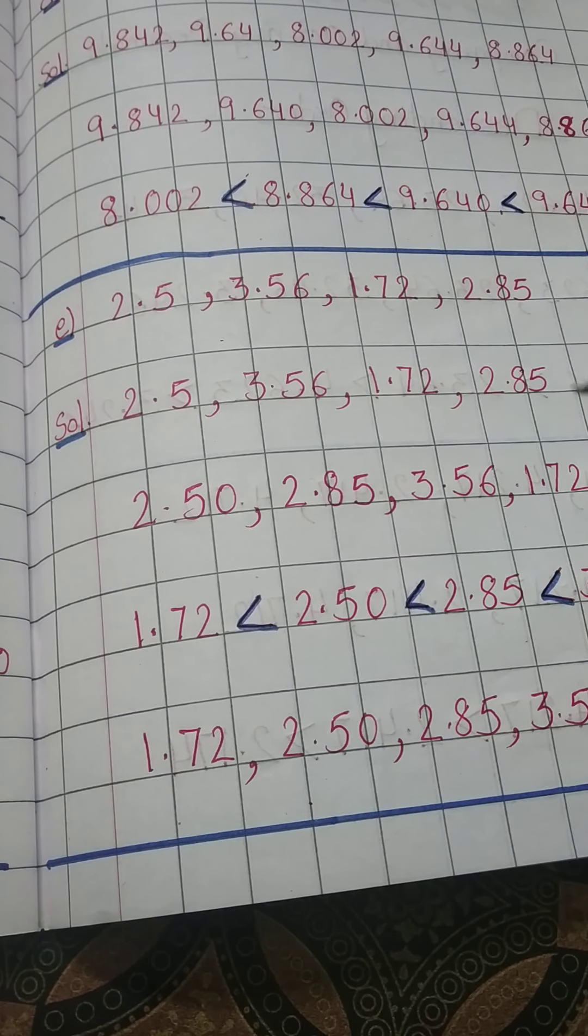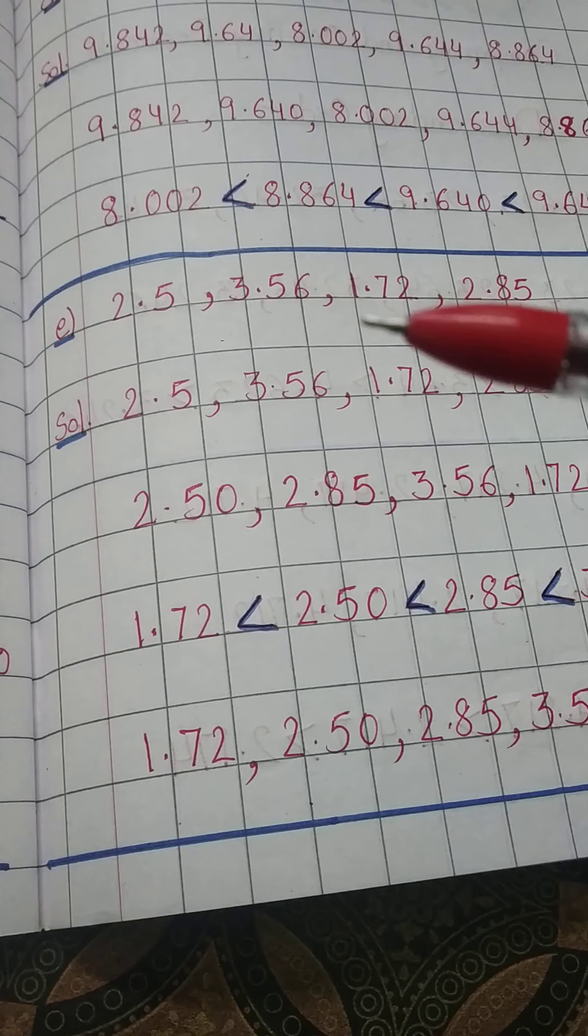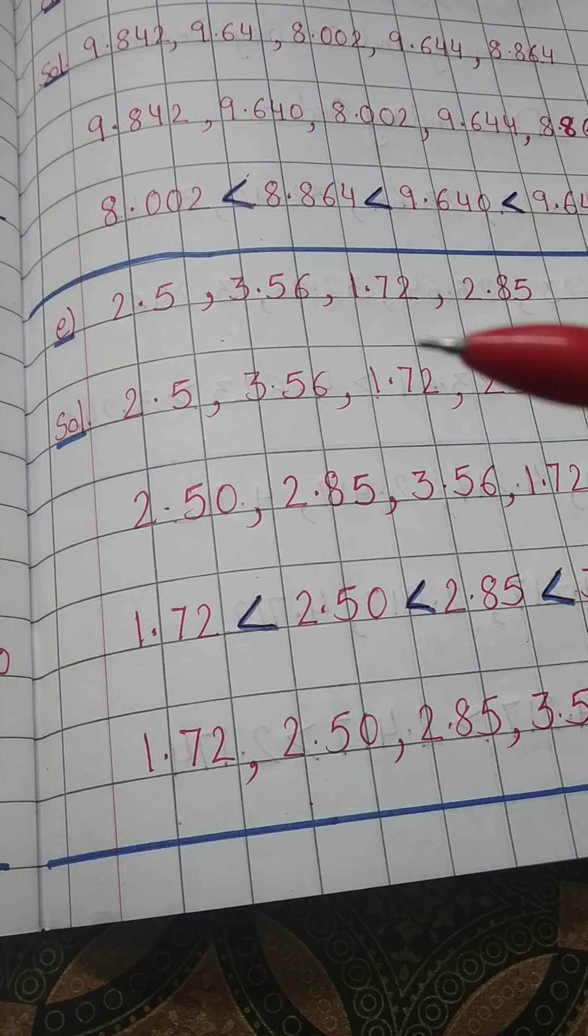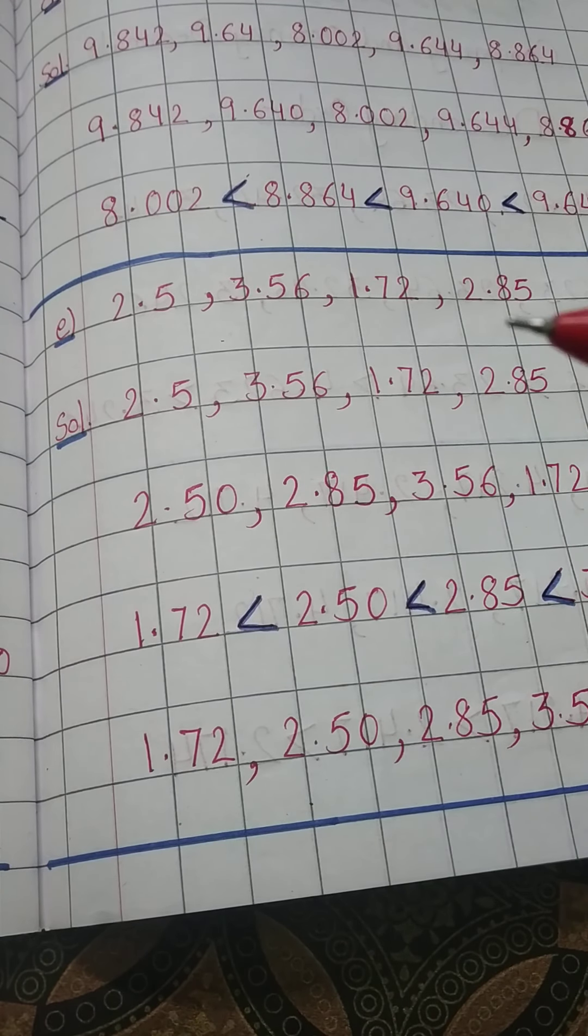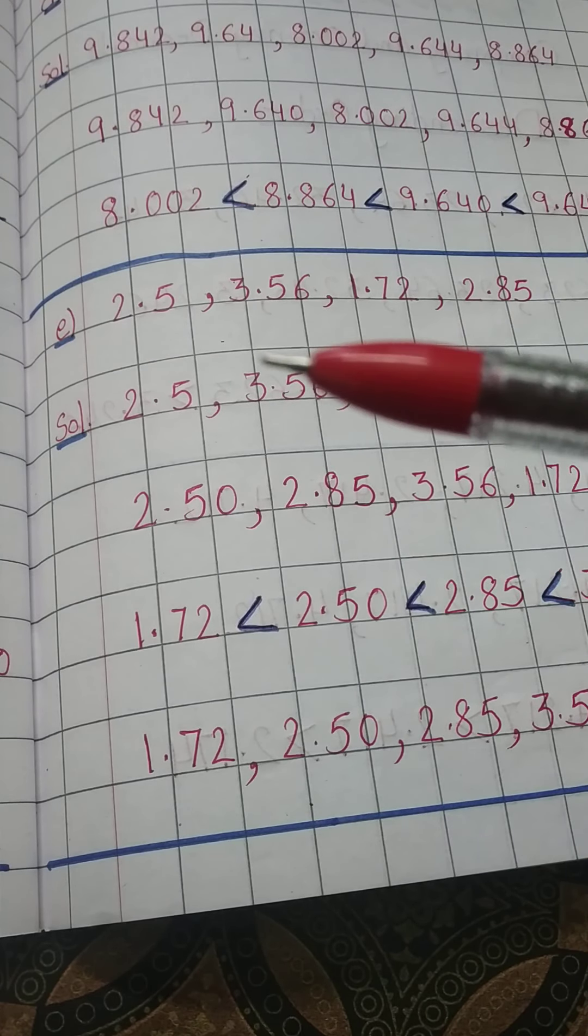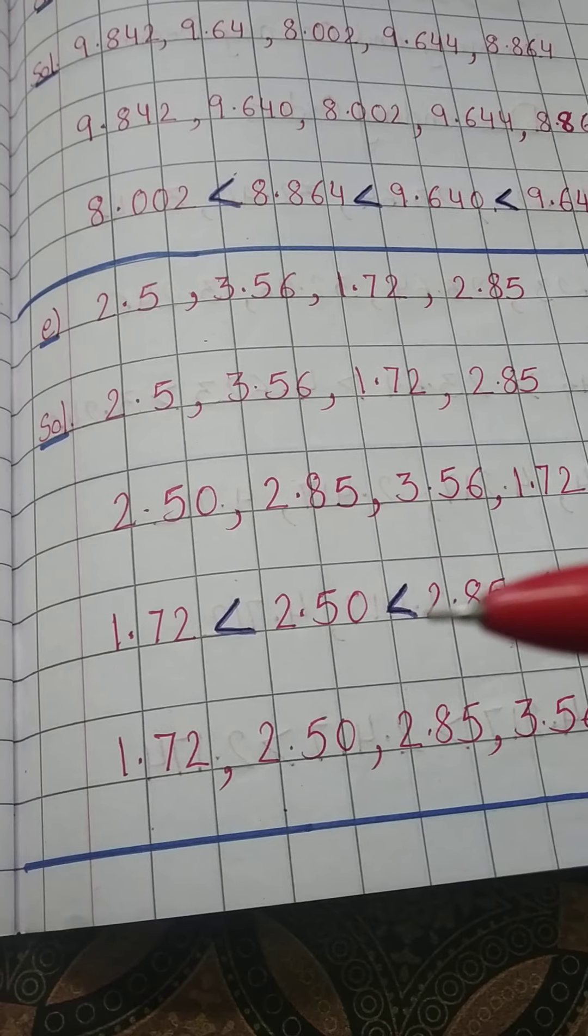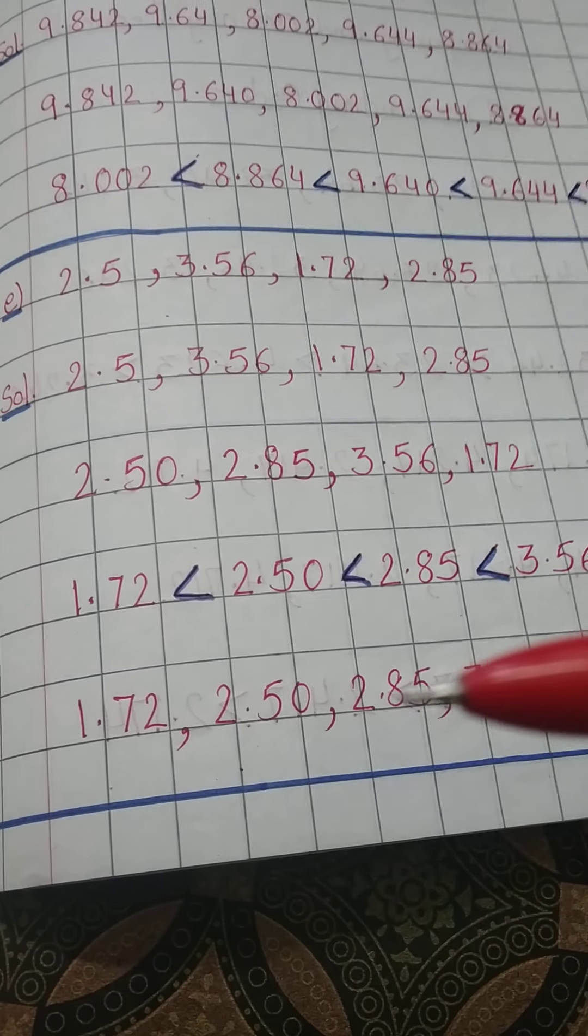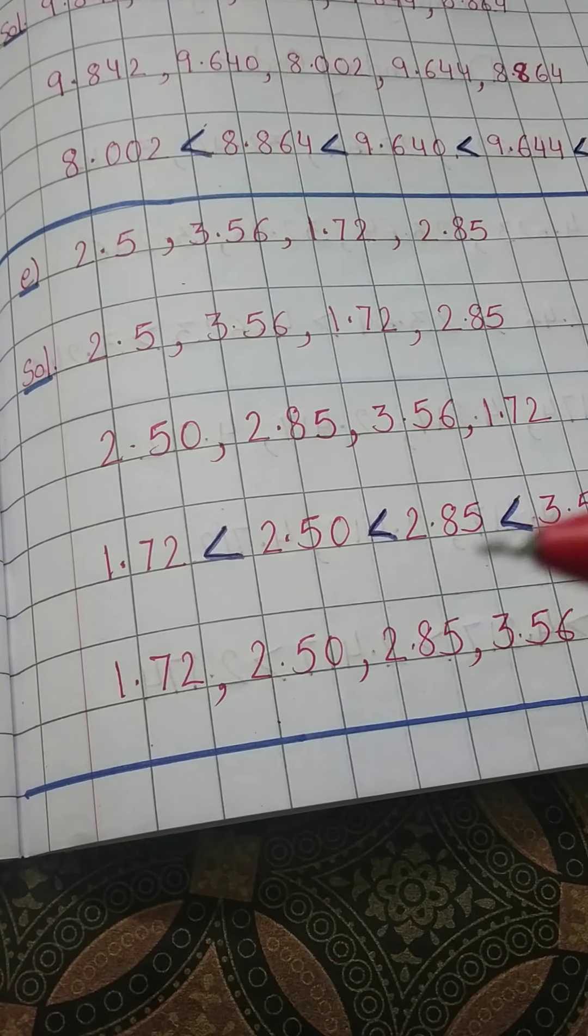So see, it is clear that 1.72 is the least. After this 2.5 and 2.85. So first 2.5, I will make like fraction 2.50 I will write, and then I will compare.